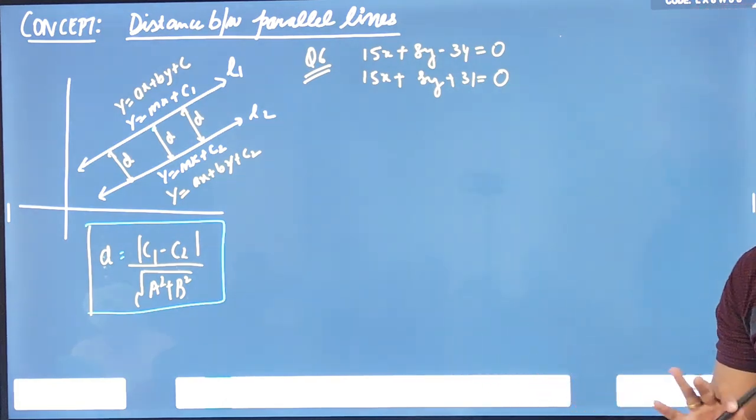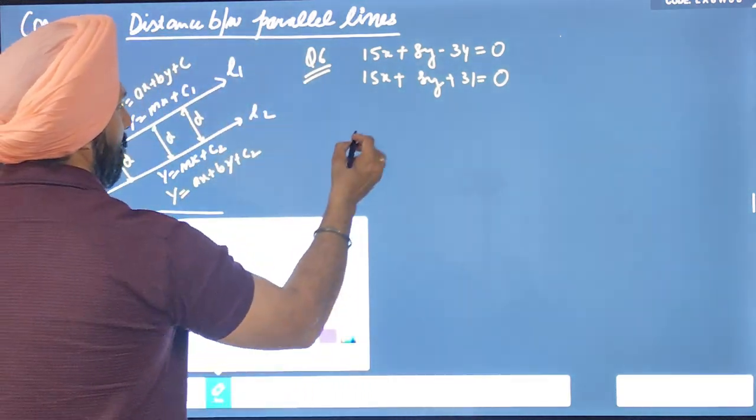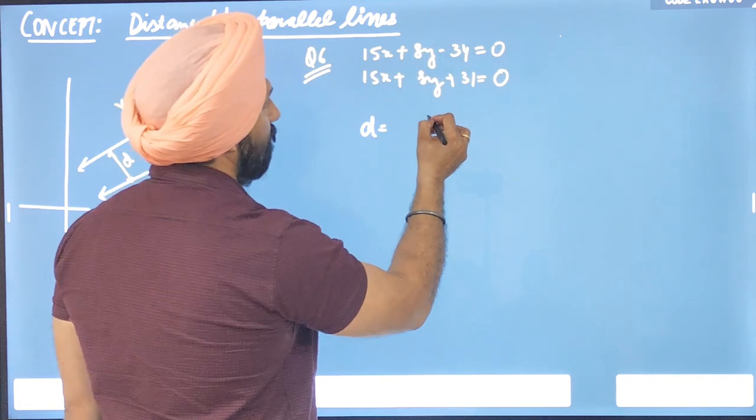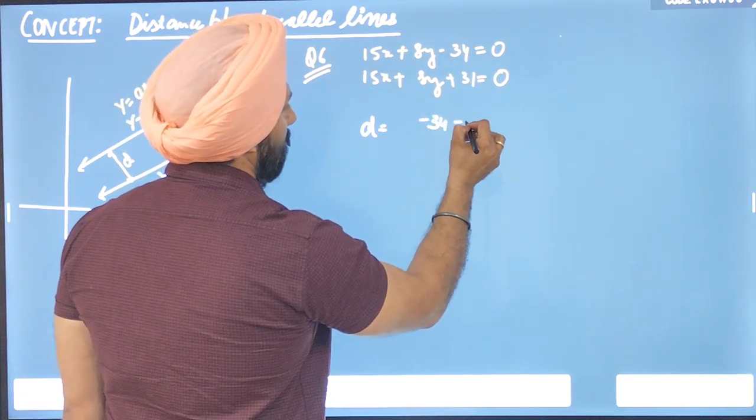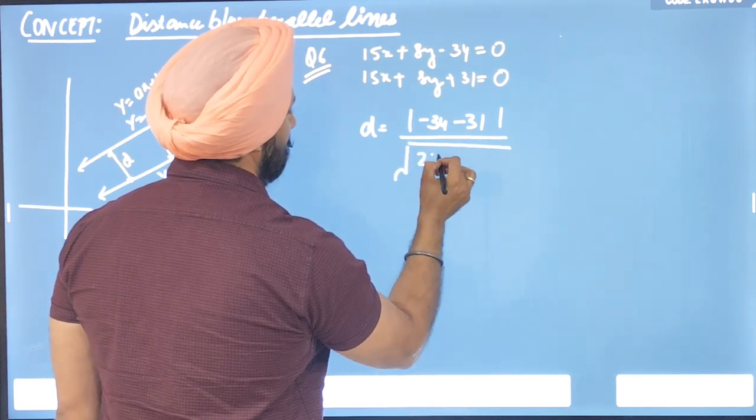Distance will be equal to c1 minus c2, minus 34 minus 31, upon under root of 15 square is 225 and 8 square is 64.